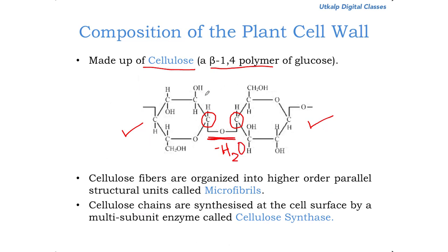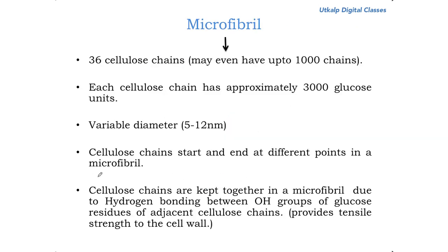This forms a beta-1,4 link — the orientation of the bond is beta in nature. The cellulose fibers are organized into higher-order parallel structural units called microfibrils. The cellulose chains are synthesized at the cell surface by a multi-subunit enzyme called cellulose synthase, present in the plasma membrane. This enzyme synthesizes the cellulose chains and exports them to the exterior of the cell, where they are assembled into microfibrils.